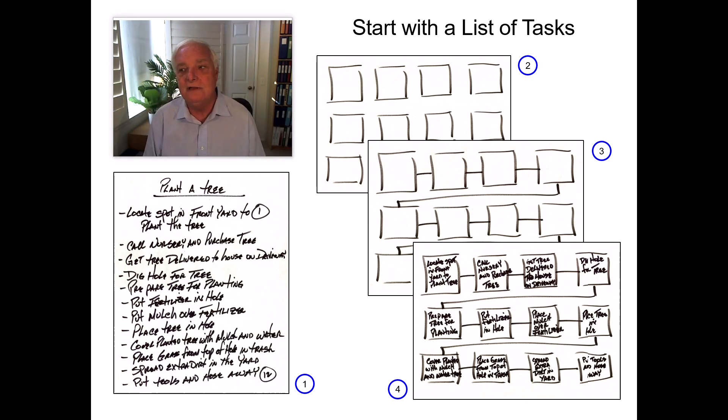So you list those and in this particular situation we have 12 different activities that are required to plant a tree.